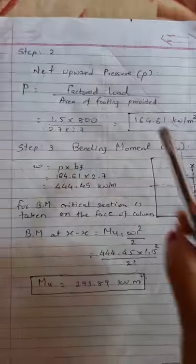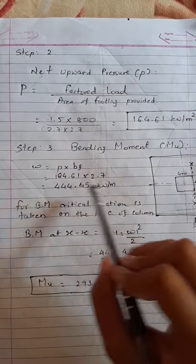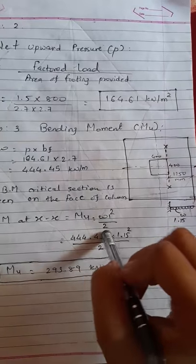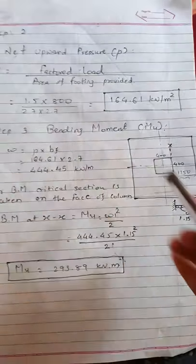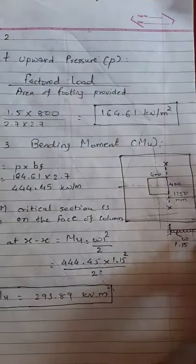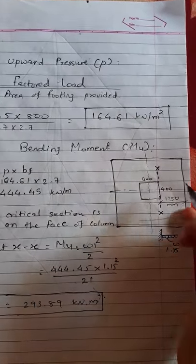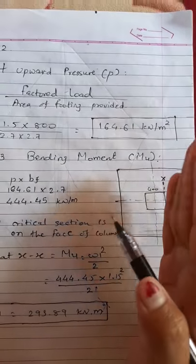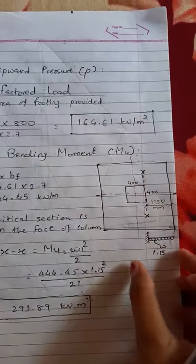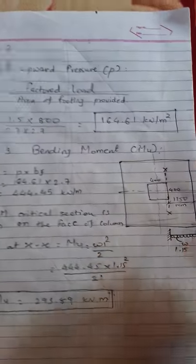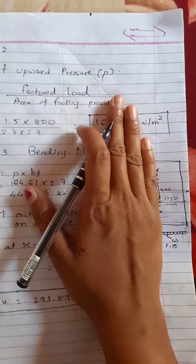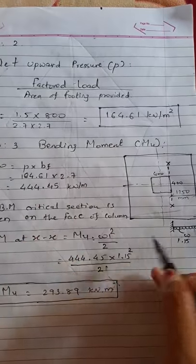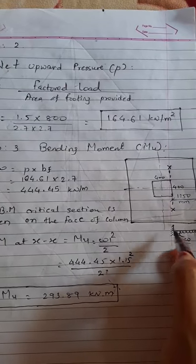This net upward pressure is used to find the bending moment. For bending moment we need UDL (uniformly distributed load) and use the cantilever formula M = wl²/2. The critical section for bending moment in a pad footing is always at the face of the column. Beyond the critical section, the portion of the footing behaves as a cantilever because the net upward pressure acts from below.